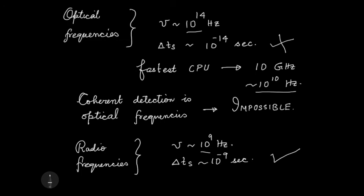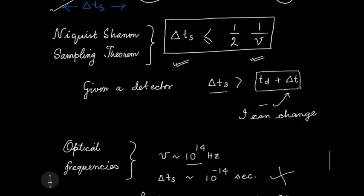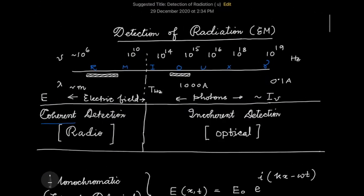To summarize: we have learned about two different detection techniques and why one is used over the other at different frequency ranges. There is a boundary around the terahertz range: above it, incoherent (photon-counting) detection is used; below it, coherent detection of the electric field is possible.